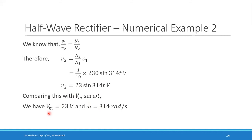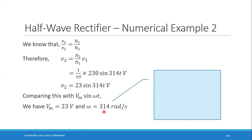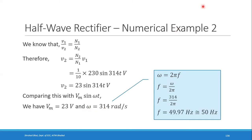From the equation, ω = 314 rad/s. If frequency is asked, f = ω / (2π) = 314 / (2π) ≈ 50 Hz, which is the standard AC supply frequency.